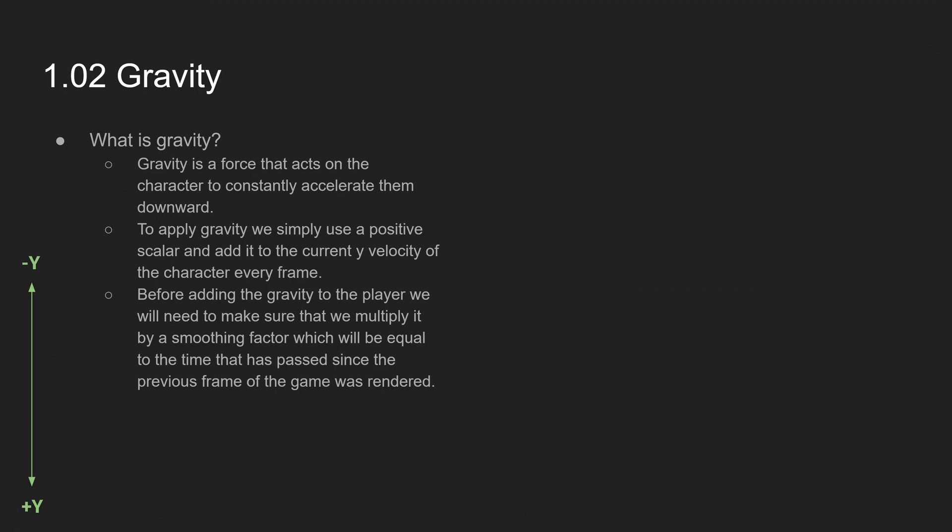So, gravity. What is gravity? Gravity is just a force that acts on a character to constantly accelerate them downward. To apply gravity, we simply use a positive scalar and add it to the current y velocity of the character before every frame. Before adding the gravity to the player, we will need to make sure that we multiply it by a smoothing factor, which will be equal to the time that is passed since the previous frame of the game was rendered. If you have experience in development, you'll know that as delta time.